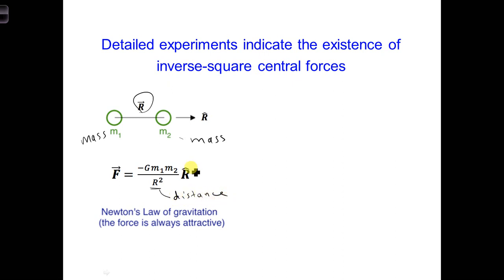And R-hat is the unit vector oriented from one mass to the other, gives it direction, and G is a gravitational constant.